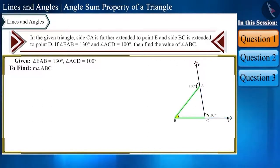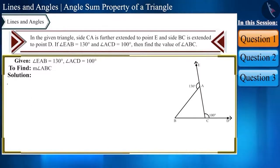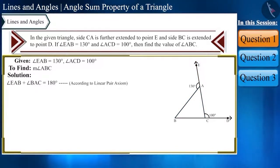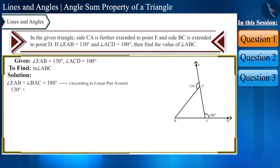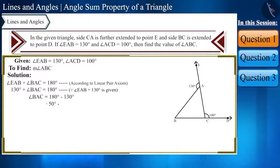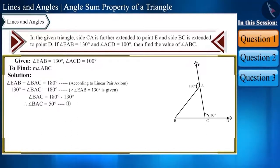We have to find the value of angle ABC. First, angle EAB plus angle BAC equals 180 degrees because it is a linear pair. Putting in the value of angle EAB: 130 degrees plus angle BAC equals 180 degrees, so angle BAC equals 50 degrees. Let's name this equation 1.